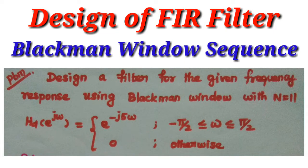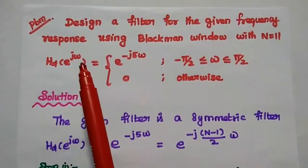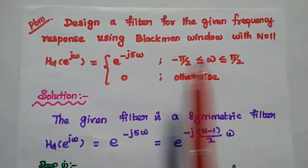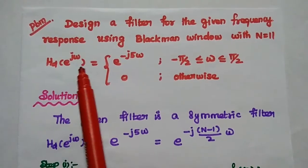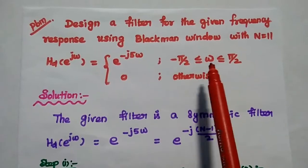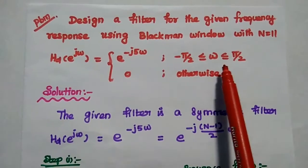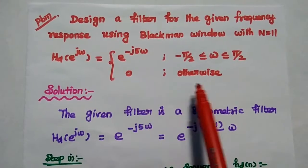Dear students, now we are going to solve an important problem in FIR filter design using Blackman window. Design a filter for the given frequency response using Blackman window with N equal to 11. The given frequency response hd(e^jω) is equal to e^(−j5ω) when the frequency is greater than or equal to −π/2 and less than or equal to +π/2, and 0 otherwise.